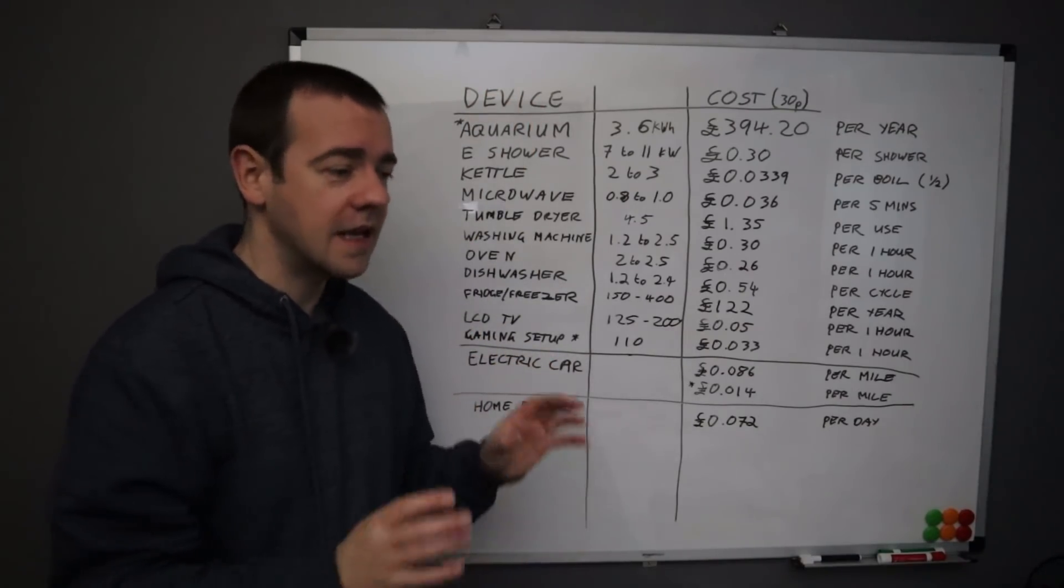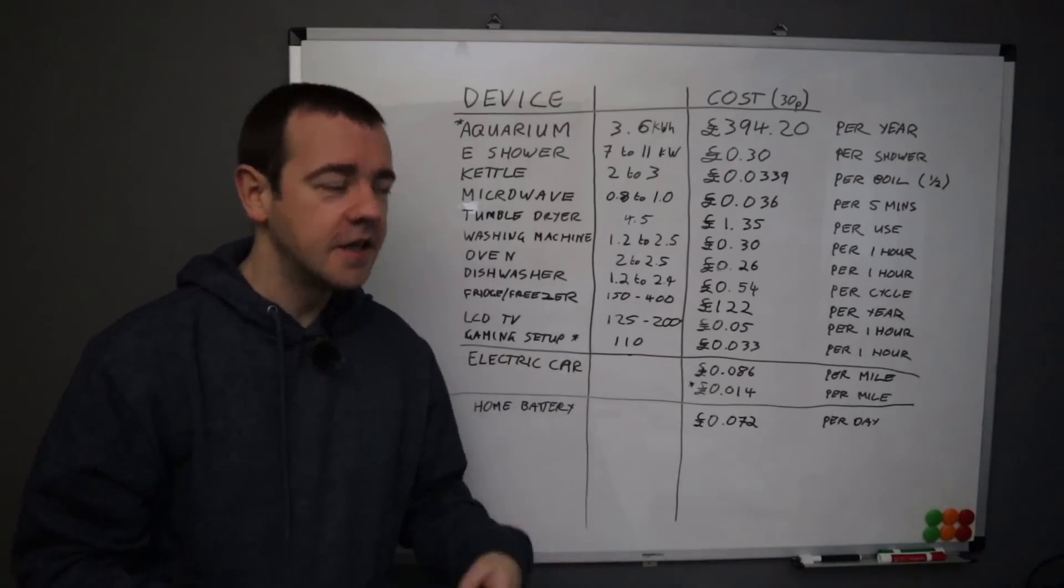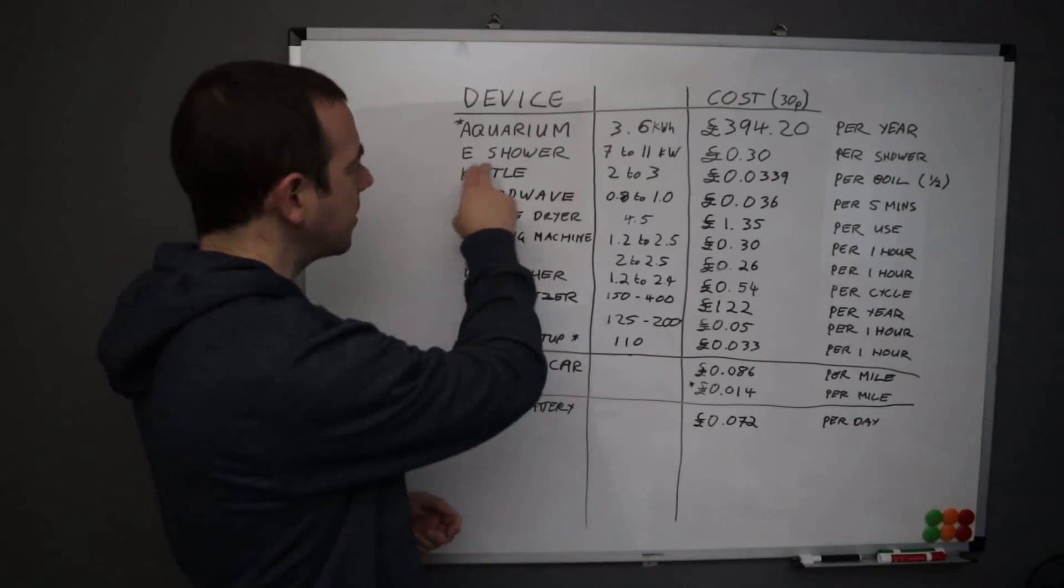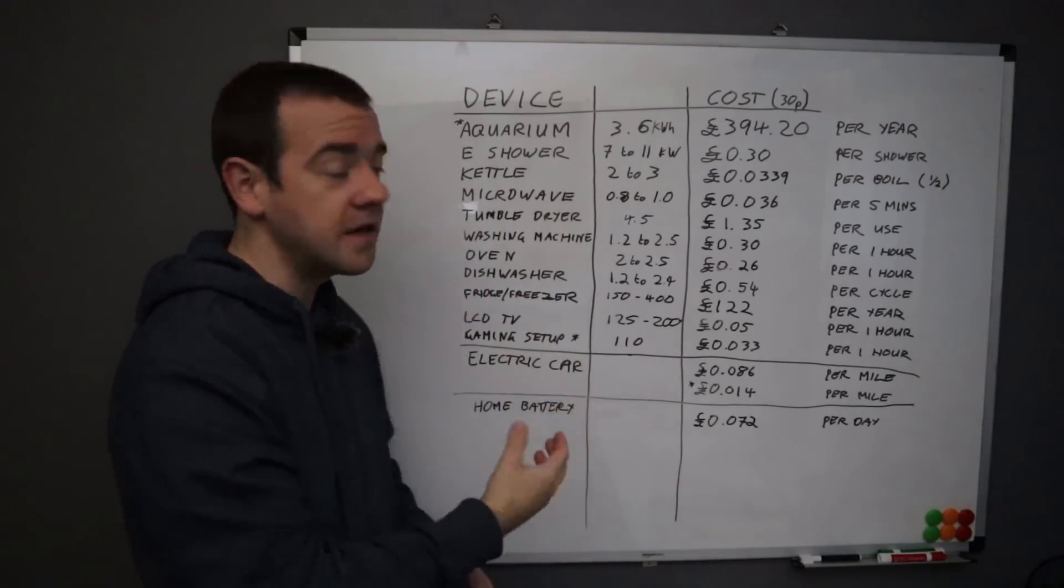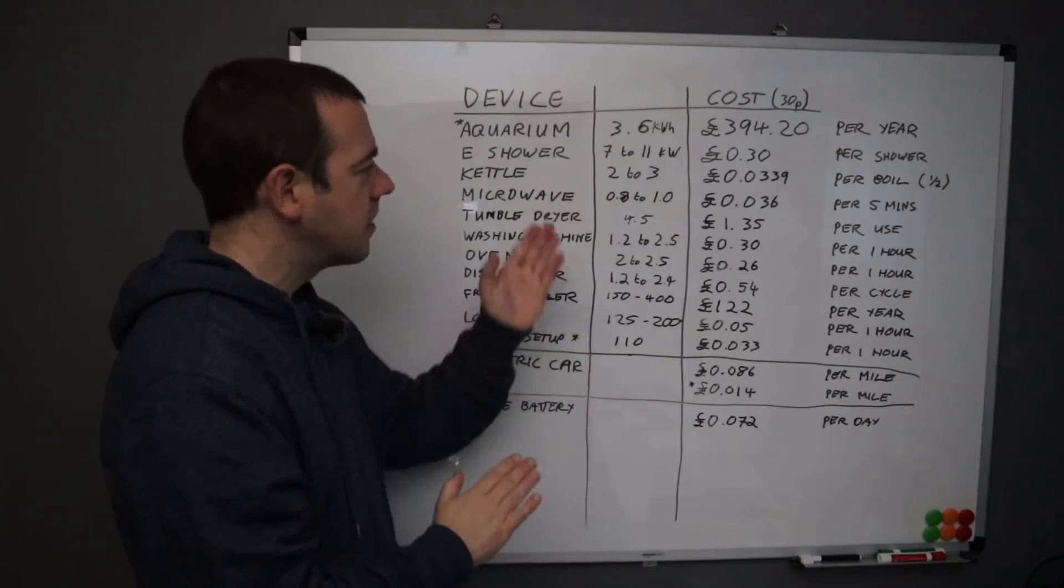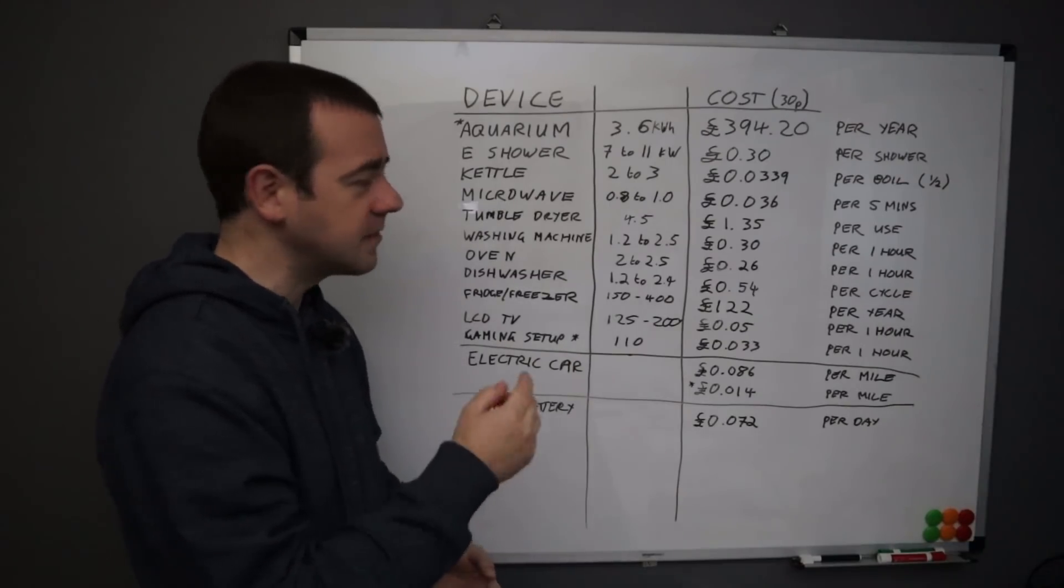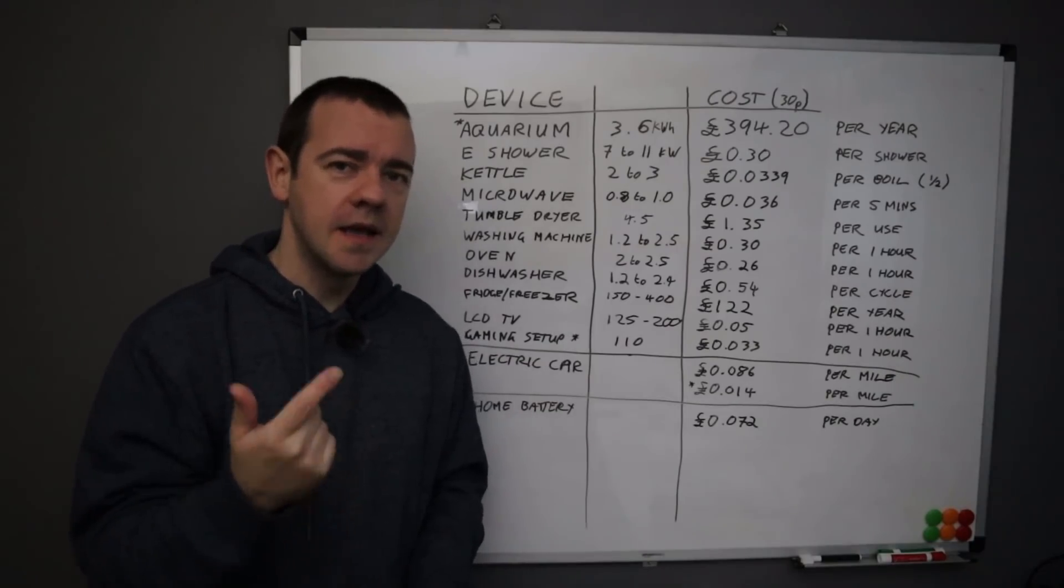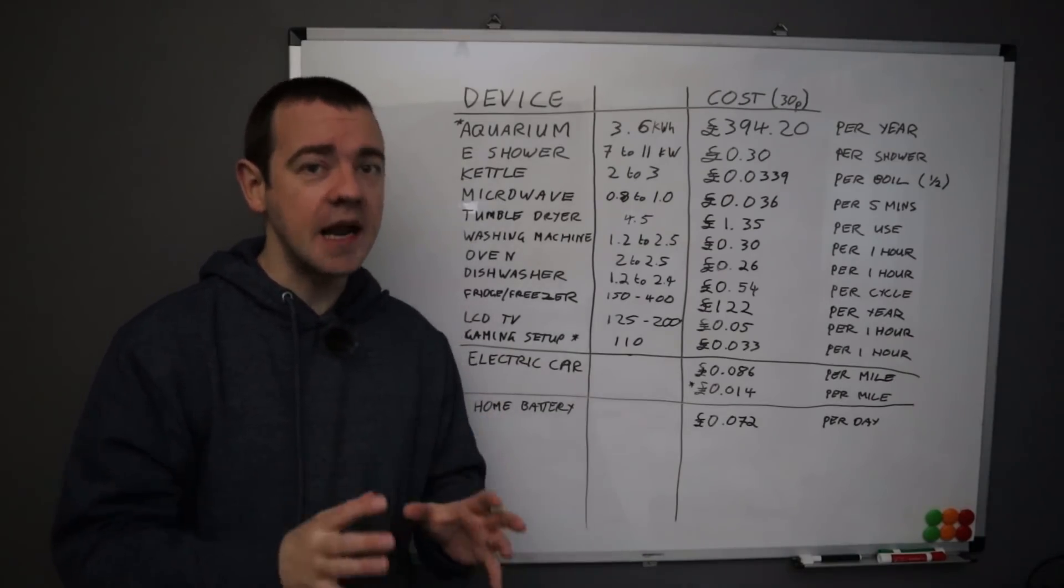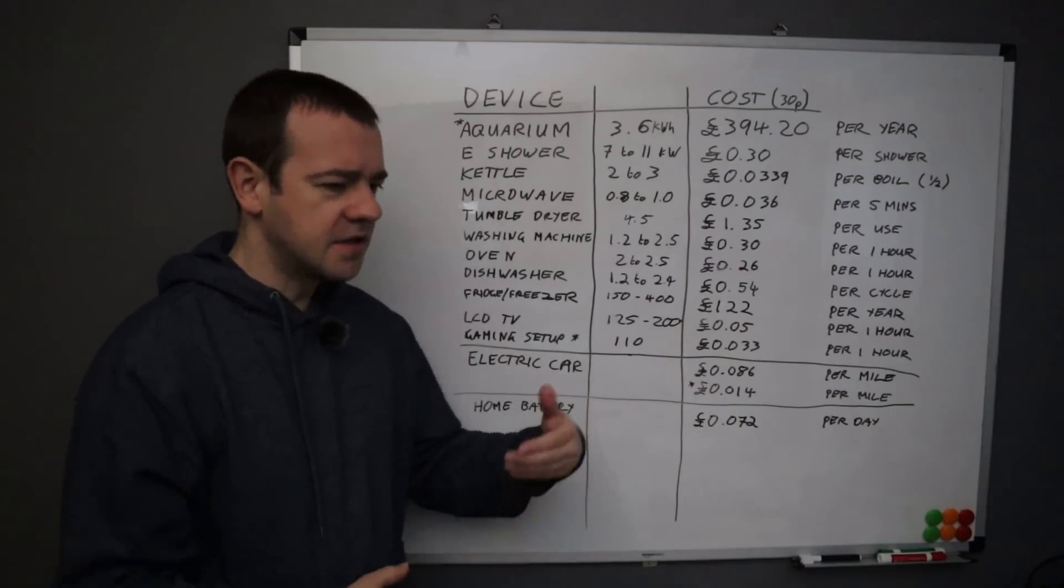If something costs you a lot of money but you get a lot of enjoyment out of it, it's worth it. Right, now let me go through some of the normal stuff. I've not gone through the entire house, this is just to give you an idea of what it, roughly, on average in the UK would cost you. An electric shower. We don't have one of these as it's boiler fed and we have a gas boiler of course at the moment.